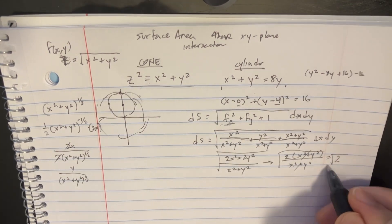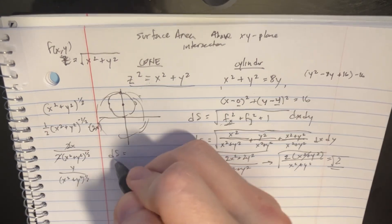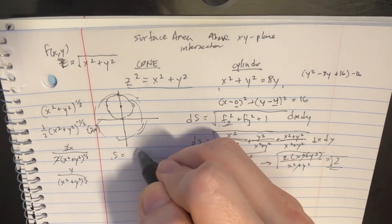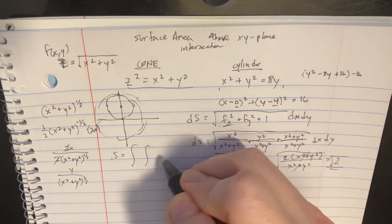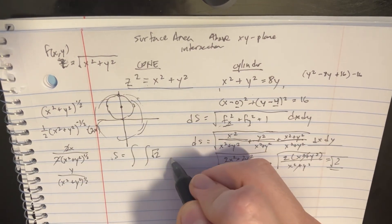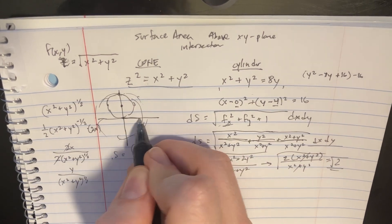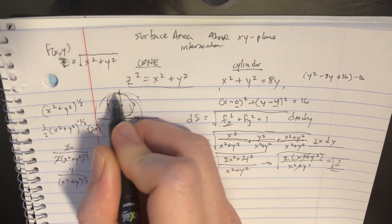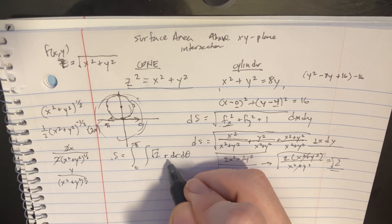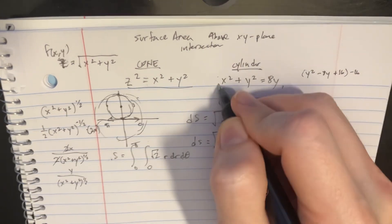So ds equals the square root of 2, and the surface area integral is the double integral of the square root of 2 dx dy. We'll transform this into polar coordinates, going to r dr dθ. For the θ limits: the cylinder only occupies the upper half, so θ goes from 0 to π.